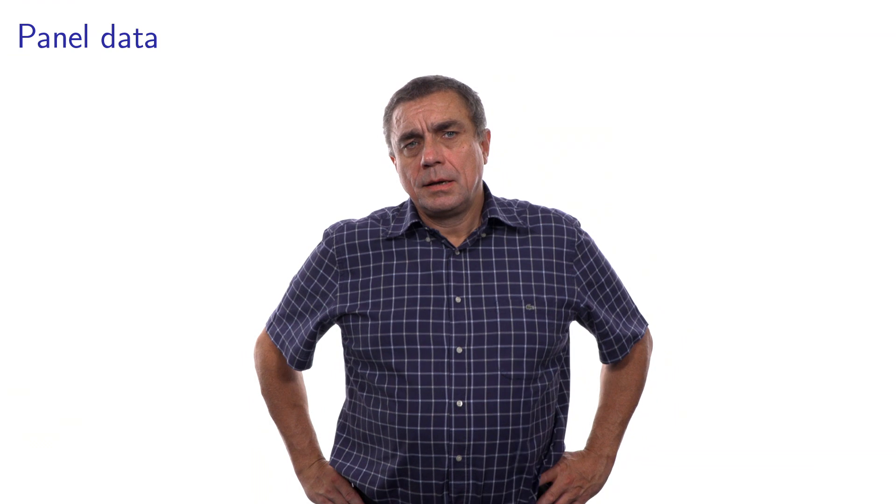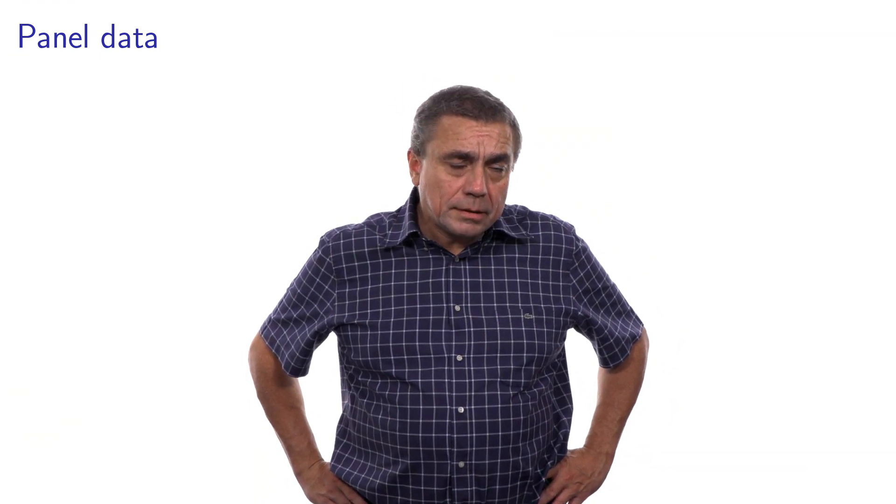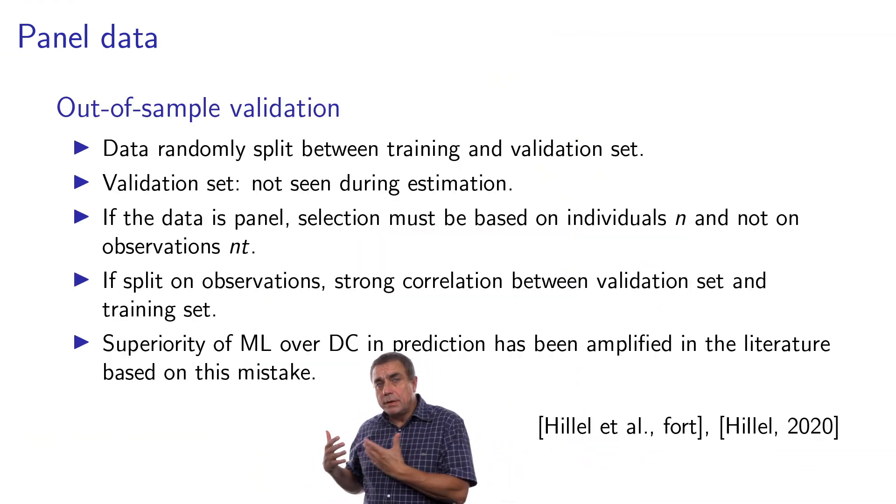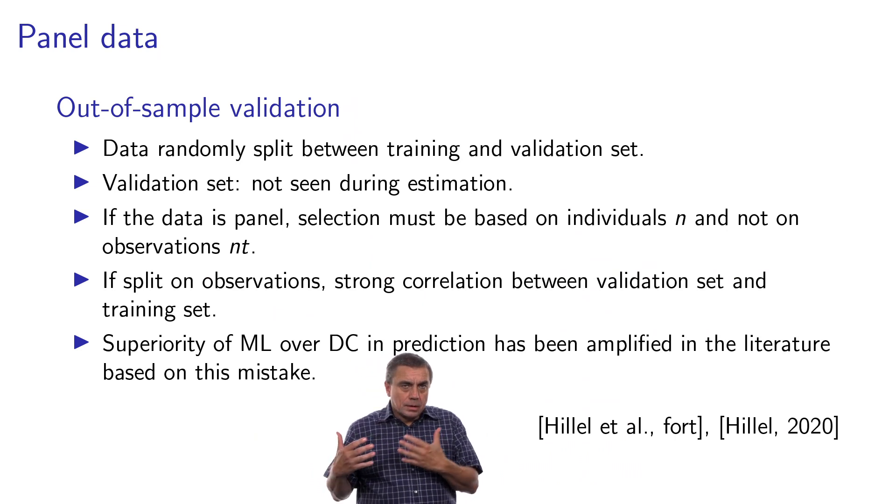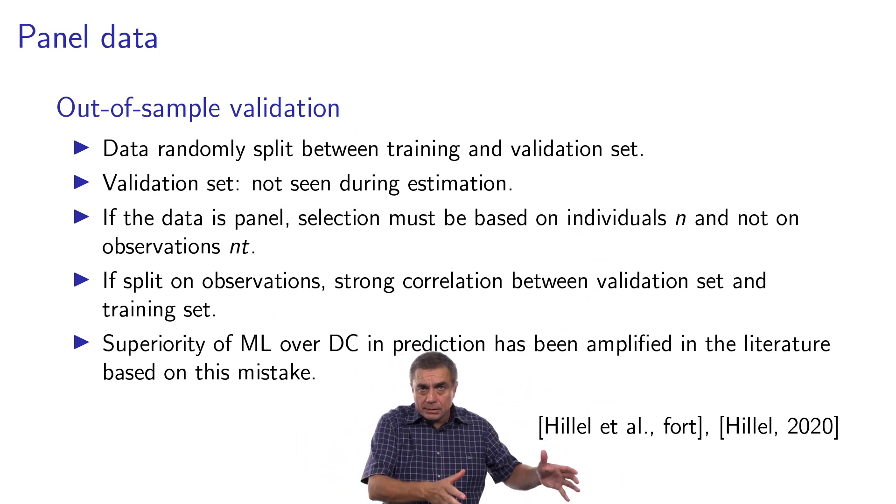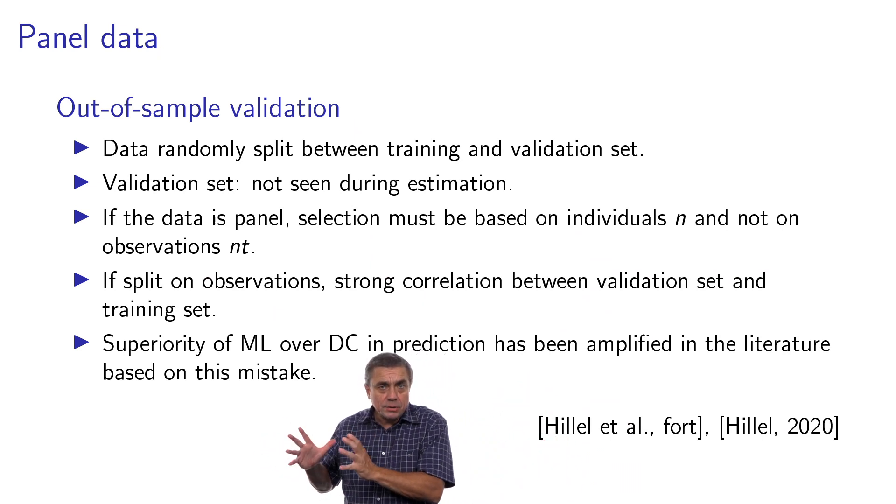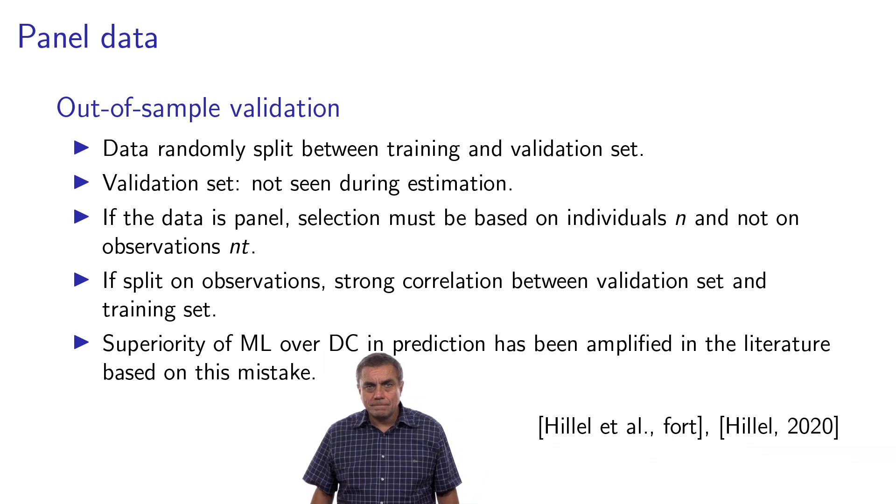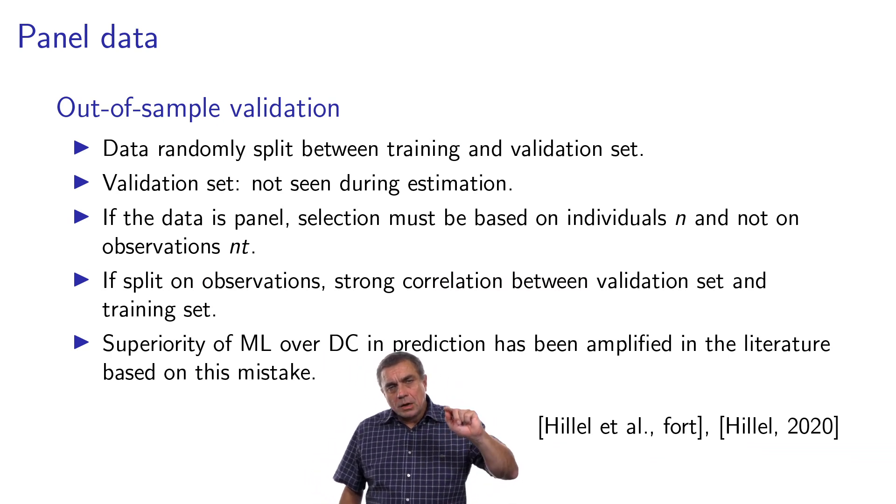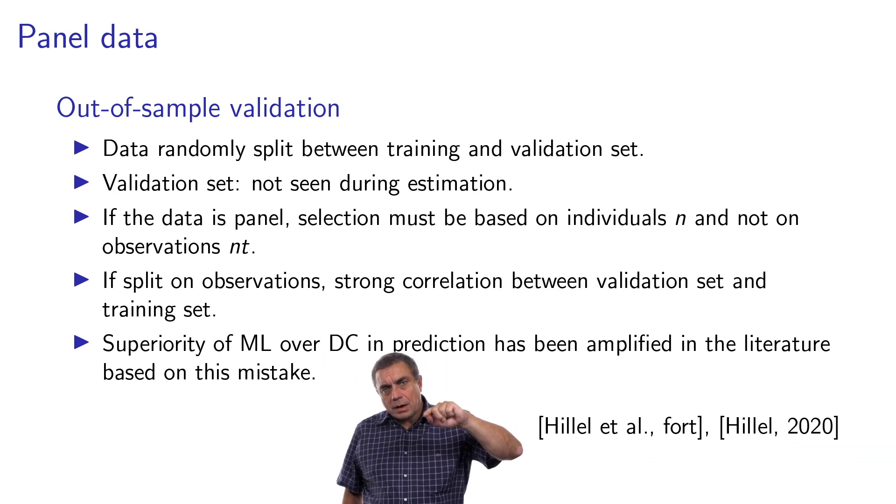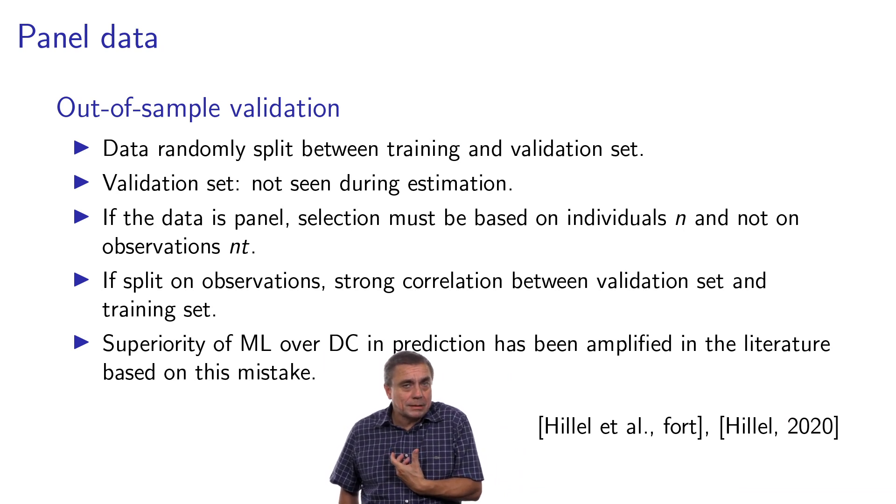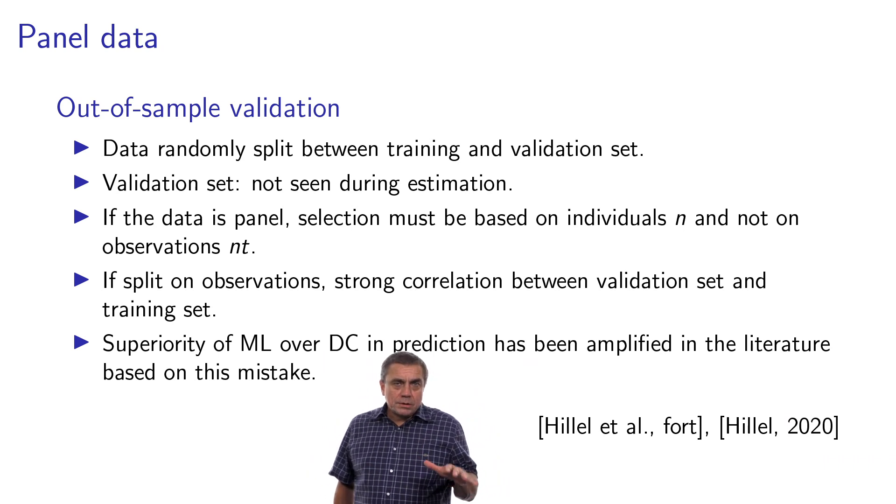Another pitfall that has been documented in the PhD thesis by Tim Hillel is the use of machine learning methods on panel data. As I mentioned before, machine learning relies a lot on out-of-sample validation. And in this case, you split the data set between a training set and a validation set. And the idea is that the validation set contains data that have not been seen during estimation. But if you have panel data, the data associated with the same individuals are strongly correlated. It's the same individual. In particular, all the socio-economic characteristics are exactly the same.